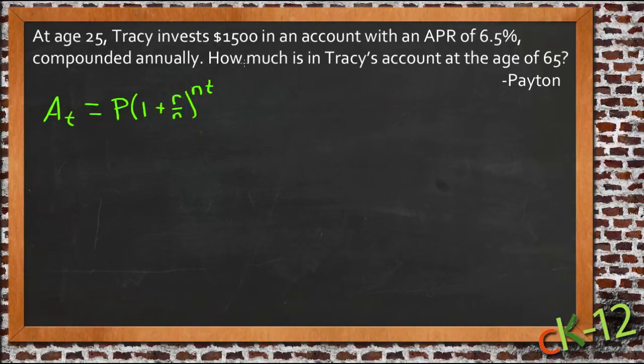The question that was sent in here by Payton is very applicable to that, so we'll use it as our background information. His question says that at age 25, Tracy invests $1,500 in an account that has an APR of 6.5% compounded annually. How much is in Tracy's account at the age of 65?